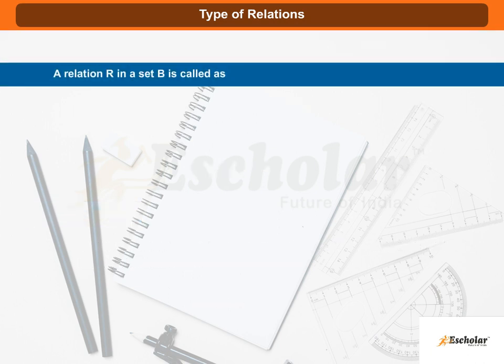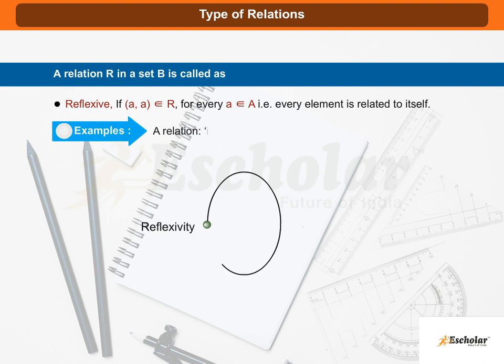A relation R in a set B is called reflexive if (a, a) belongs to R for every a belonging to A, i.e., every element is related to itself. Example: A relation is equal to on the set of real numbers.